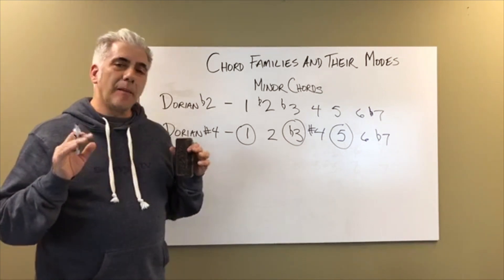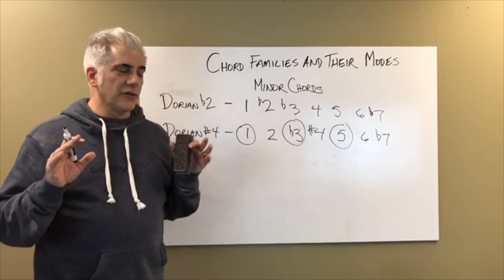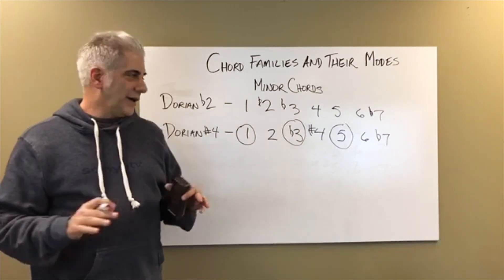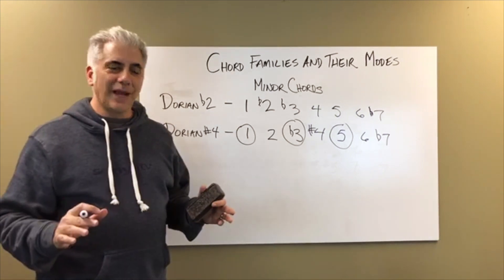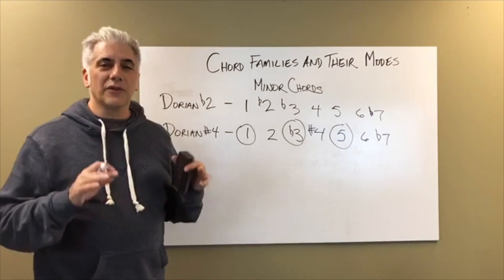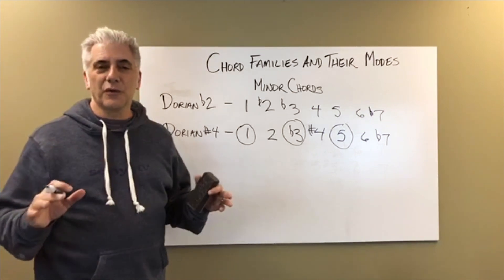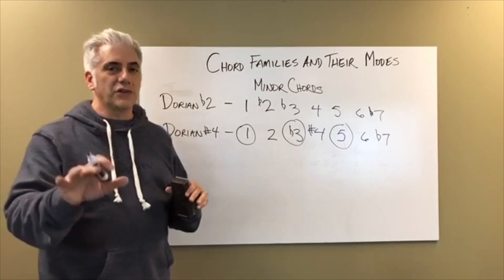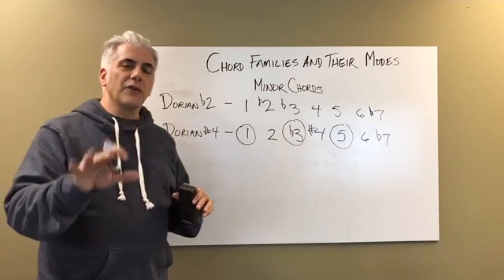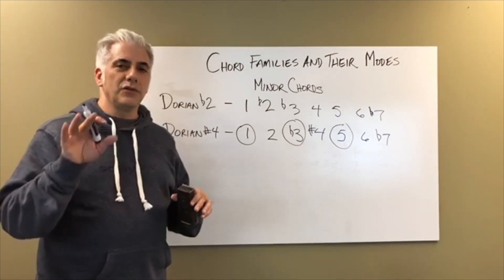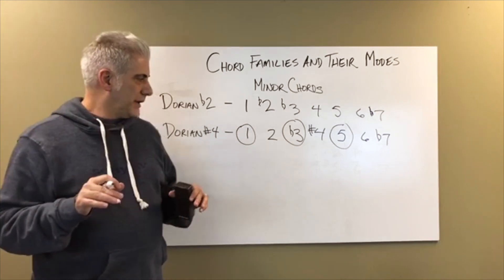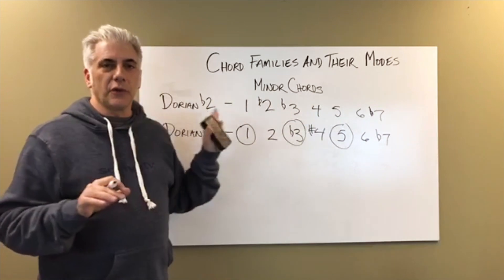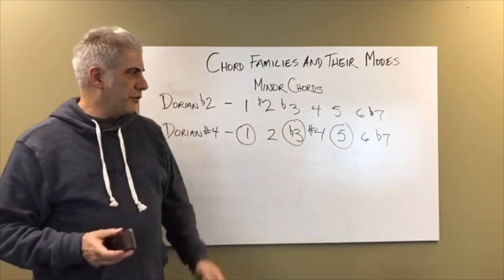All these scales retain their minor feel because they have 1, flat 3, and 5 — a minor triad. Every minor scale covered has 1, flat 3, 5. These are your choices, your palette of scales to improvise with, to write melodies out of, to derive chords from. All of them have triads, seventh chords, suspended chords, Lydian chords, Phrygian chords, and all different types of things. These are your minor chords that are part of the minor chord family.